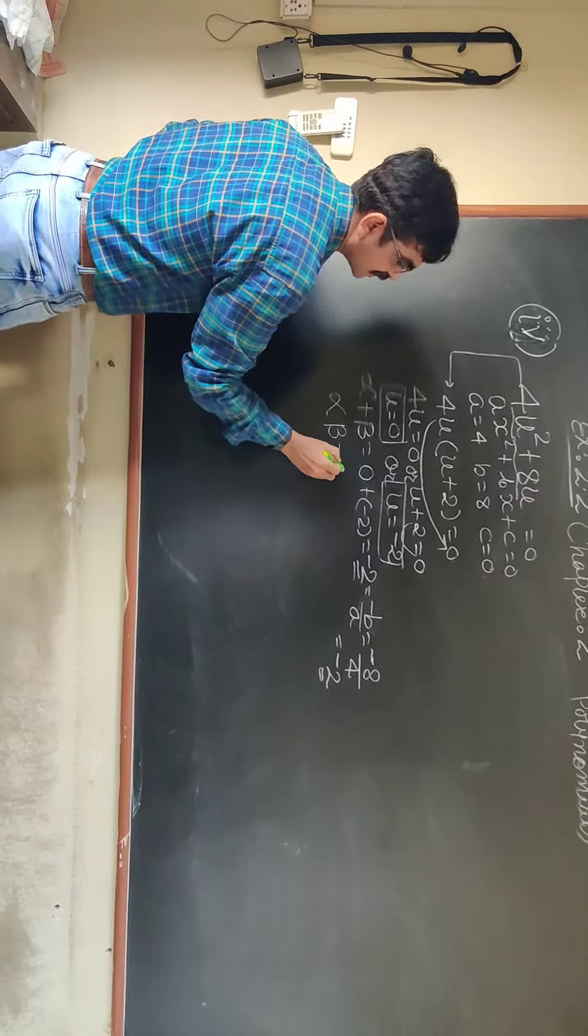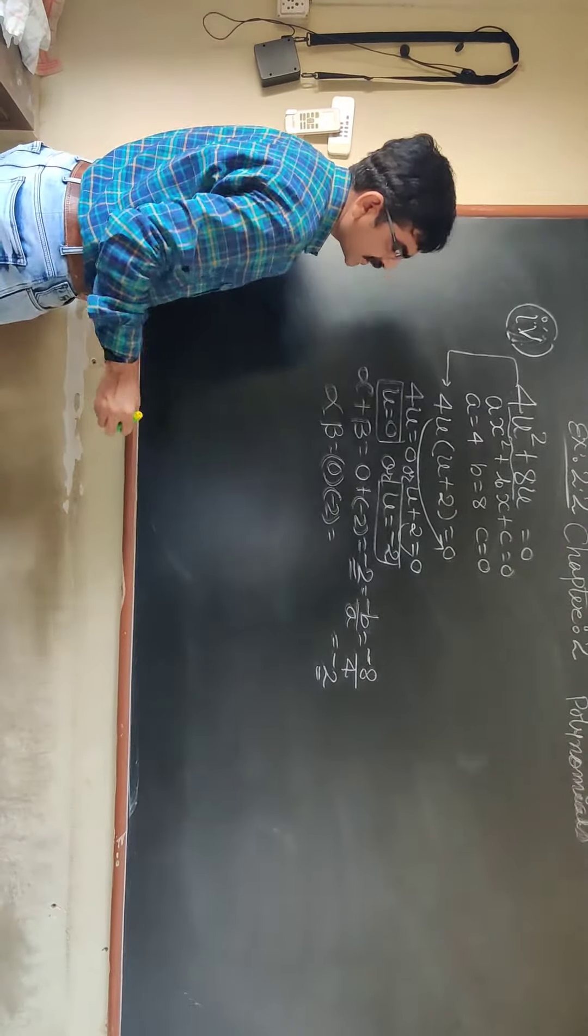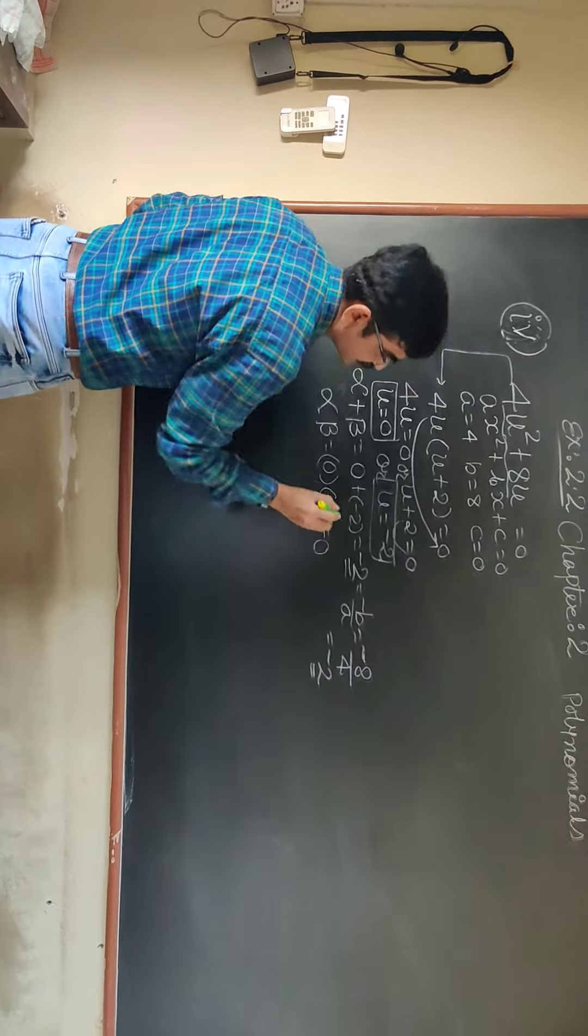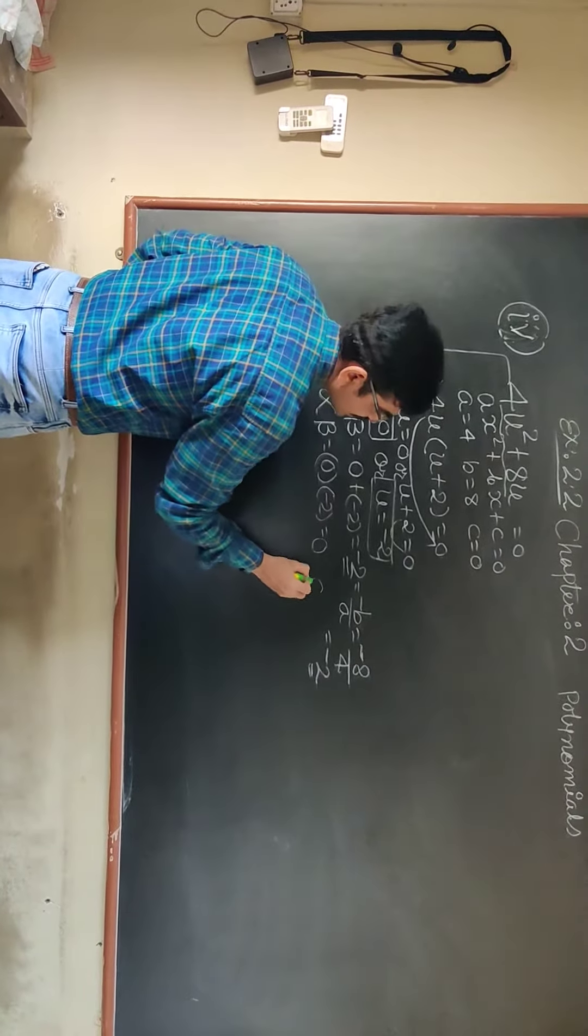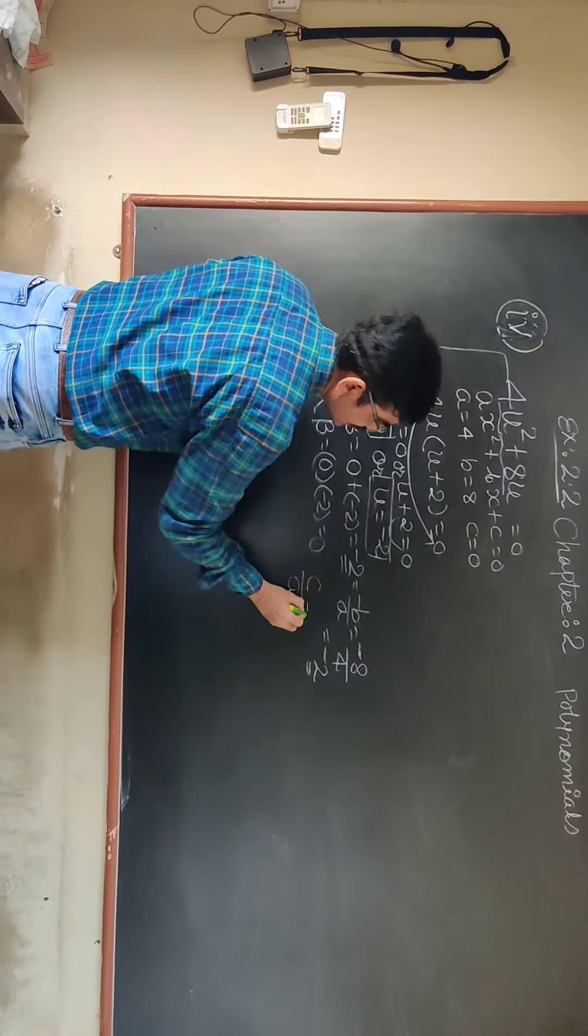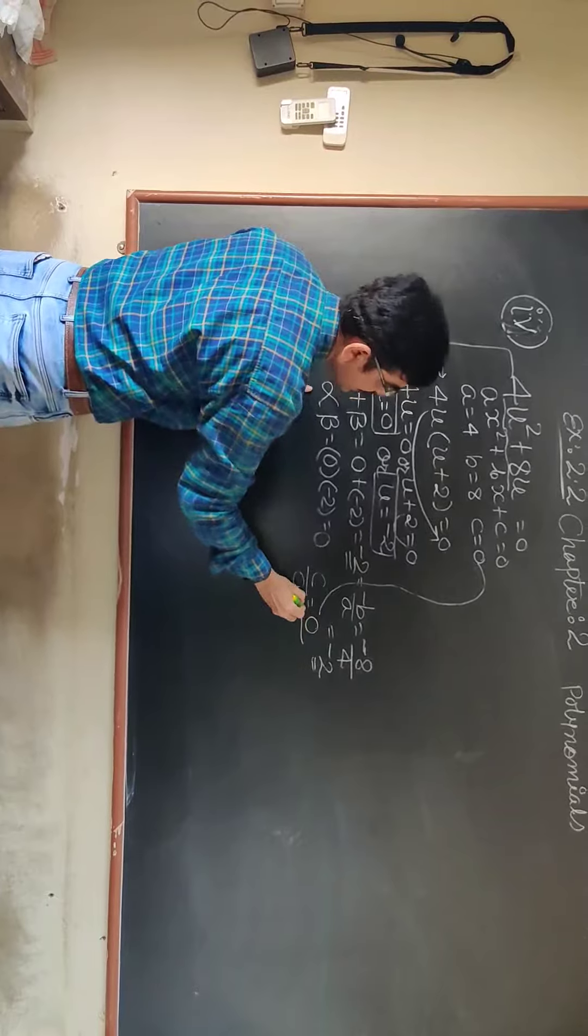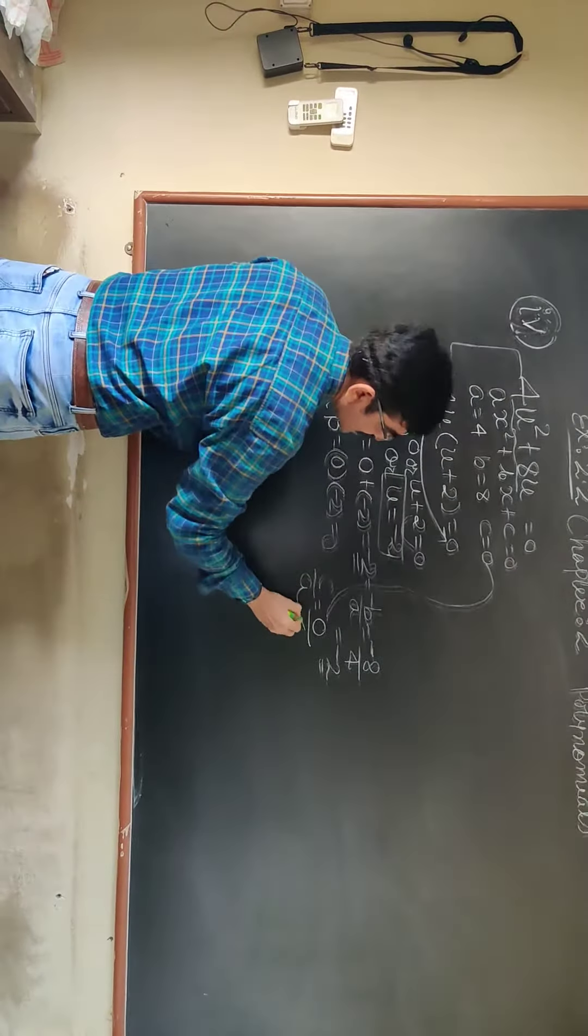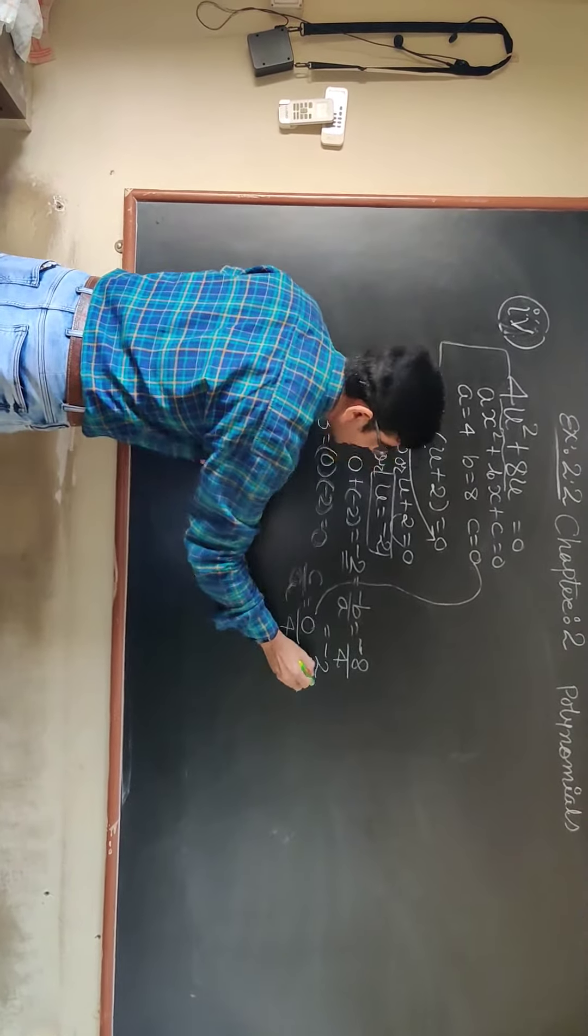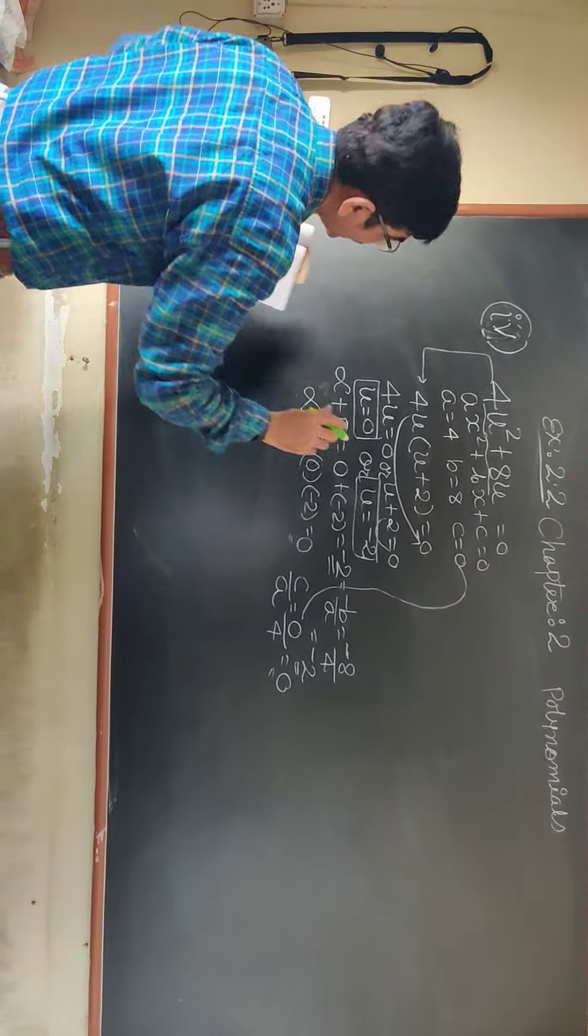Now, product of the root, alpha beta. 0 into minus 2. 0 multiplied by anything, always 0. And c upon a, what is c? C is 0, you can see. What is a? 4. 0 upon anything, answer 0. That is how this sum is also completed.